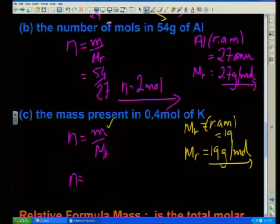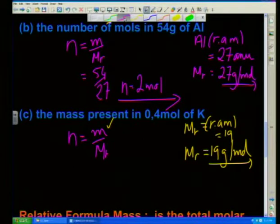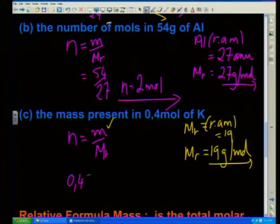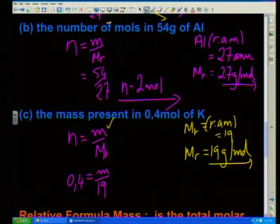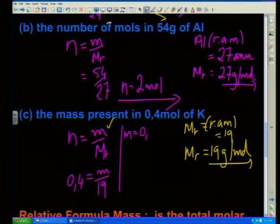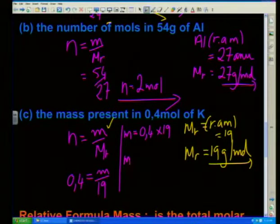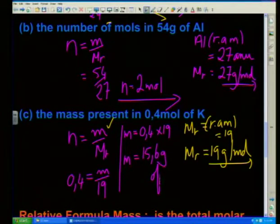N is 0.4 equals m over 19. If we want to solve for m, then m is equal to 0.4 multiplied by 19, and the mass that we get is 15.6 grams of potassium.